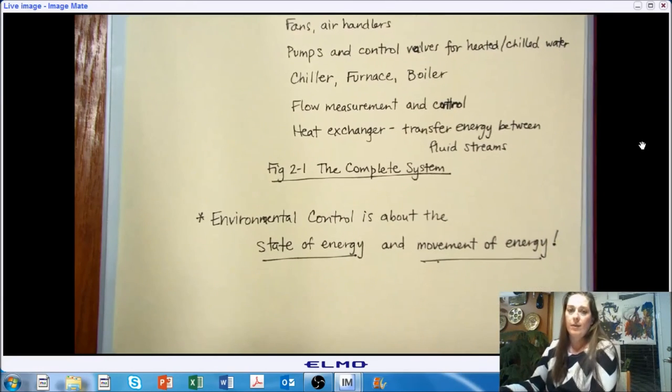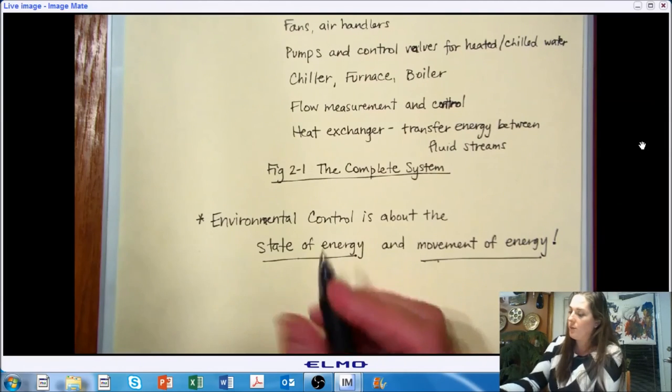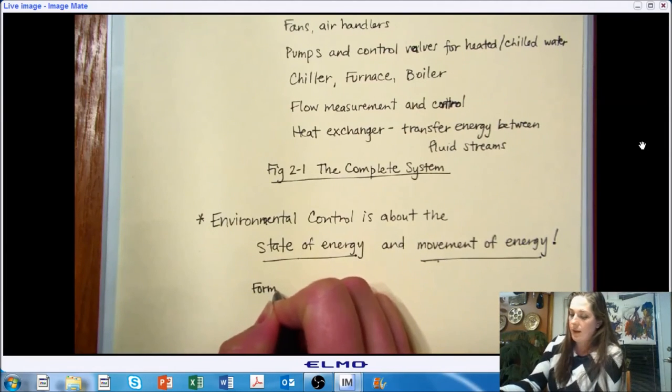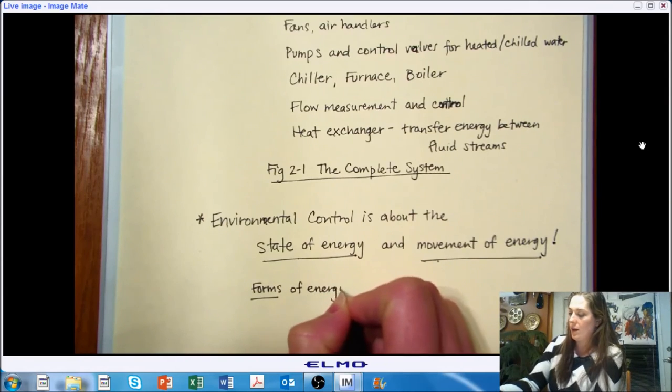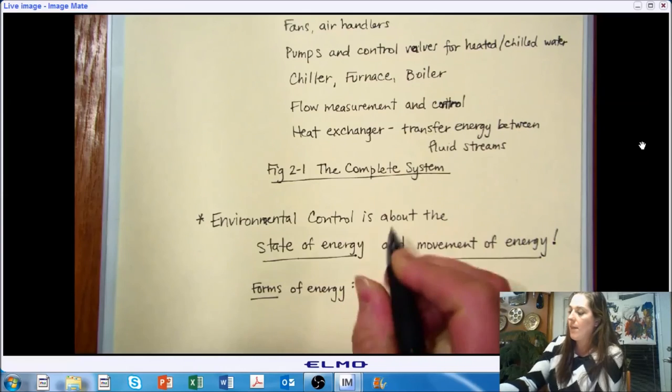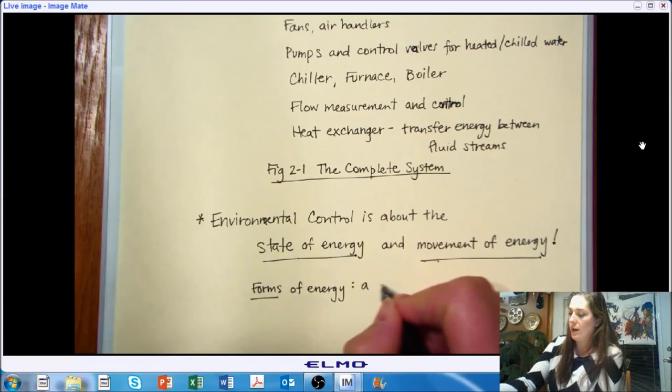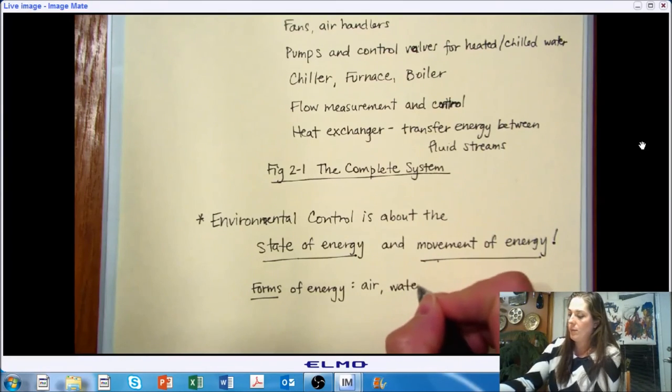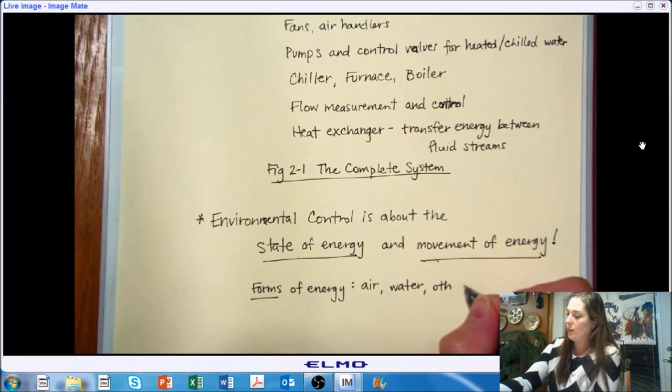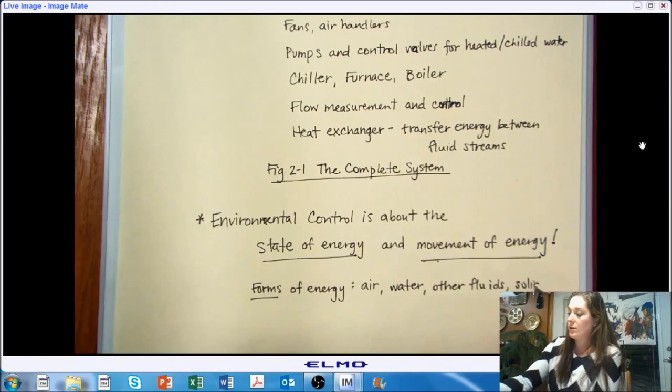And as we're thinking about this state of energy and movement of energy, we need to bear in mind that we can look at a variety of forms of energy as we're thinking about our processes and our methods in order to control the environment. So energy might be in the air that we're working with, it could be in water or other fluids that we're working with. And it can also be in solids. So within the structures of the facility that we're working in.